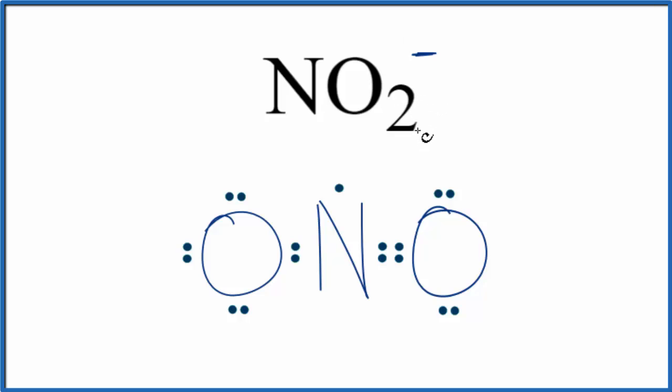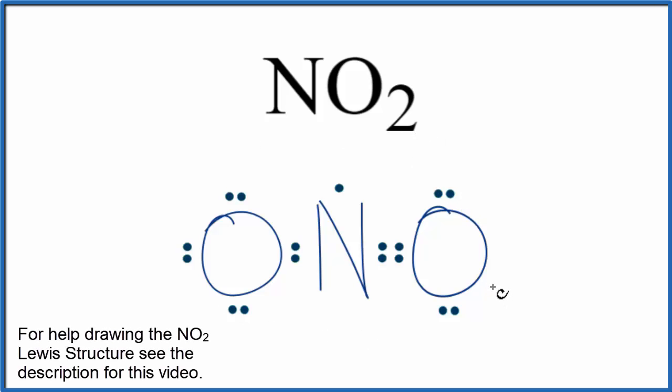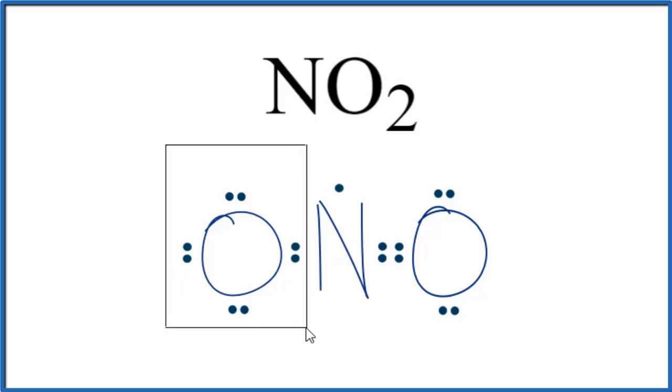Let's talk about nitrogen dioxide. Nitrogen dioxide has 17 valence electrons. When we draw the Lewis structure, we have an odd number of valence electrons. Nitrogen ends up having just seven valence electrons here, while both oxygens have octets. So the nitrogen is an exception to the octet rule—it can have seven valence electrons, but we don't see that very often.